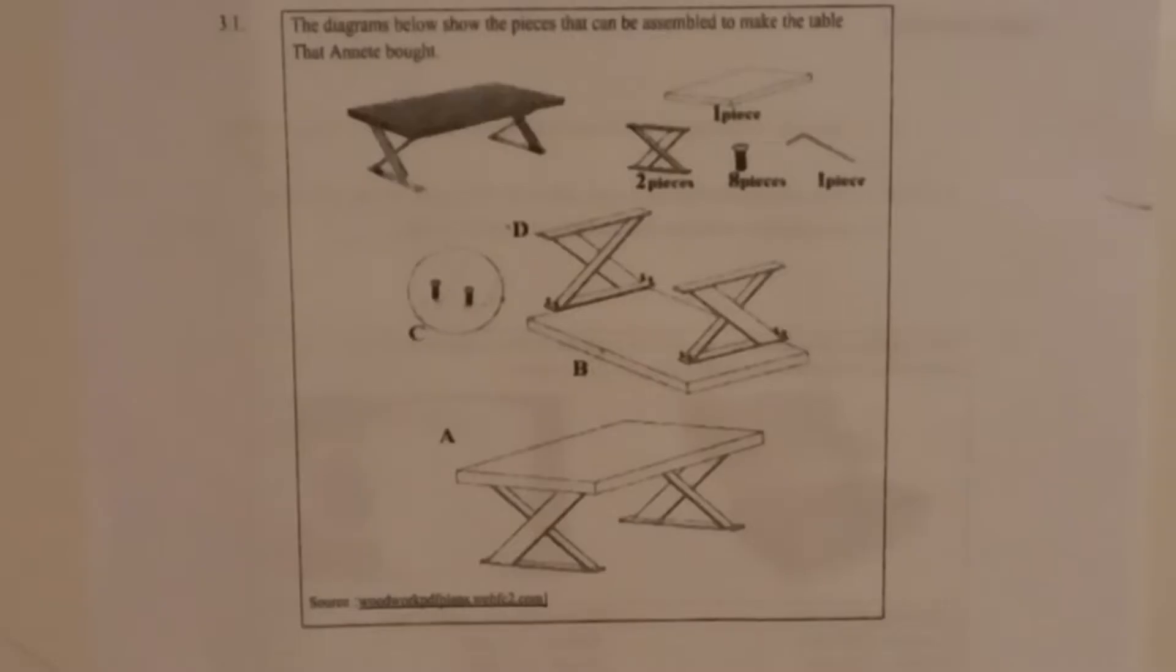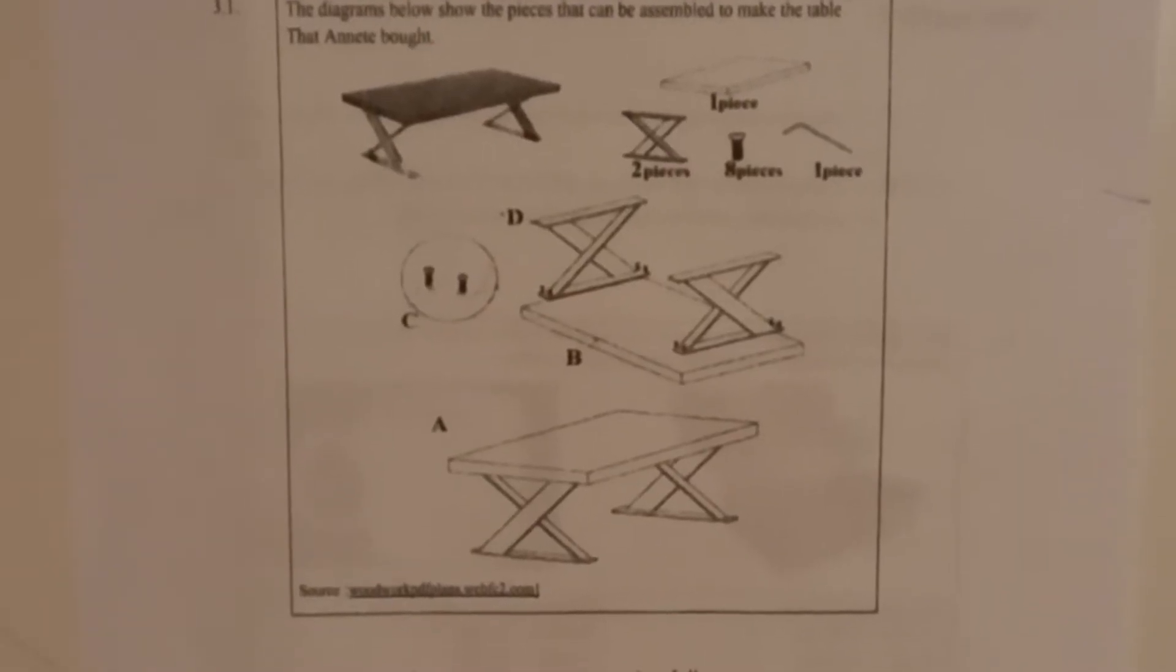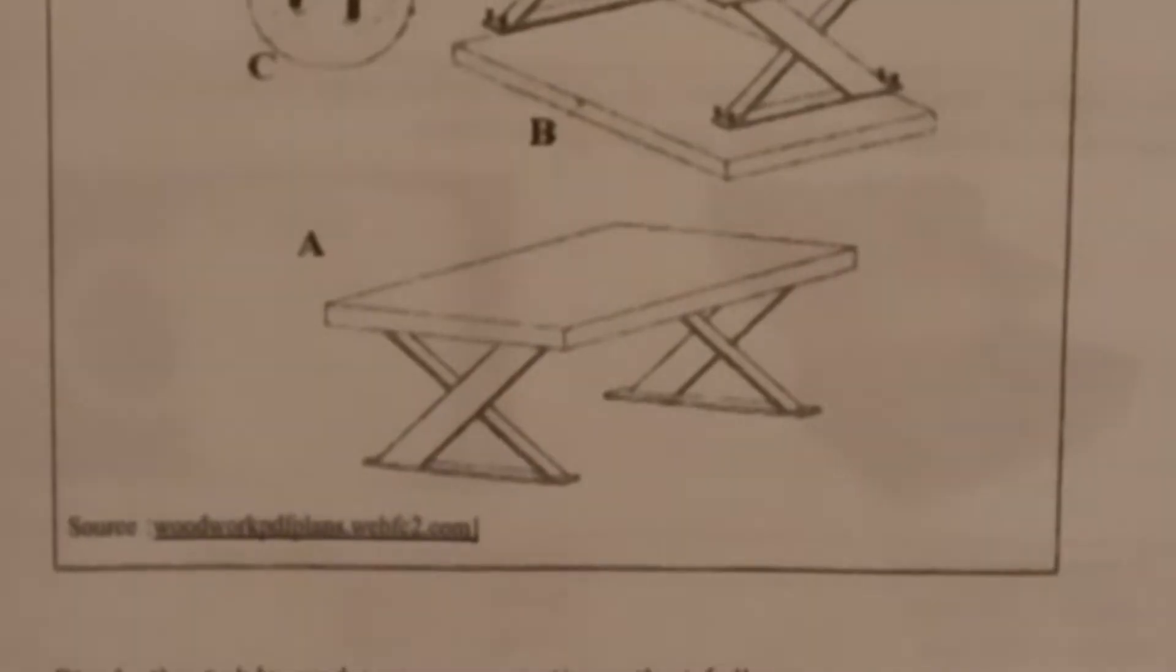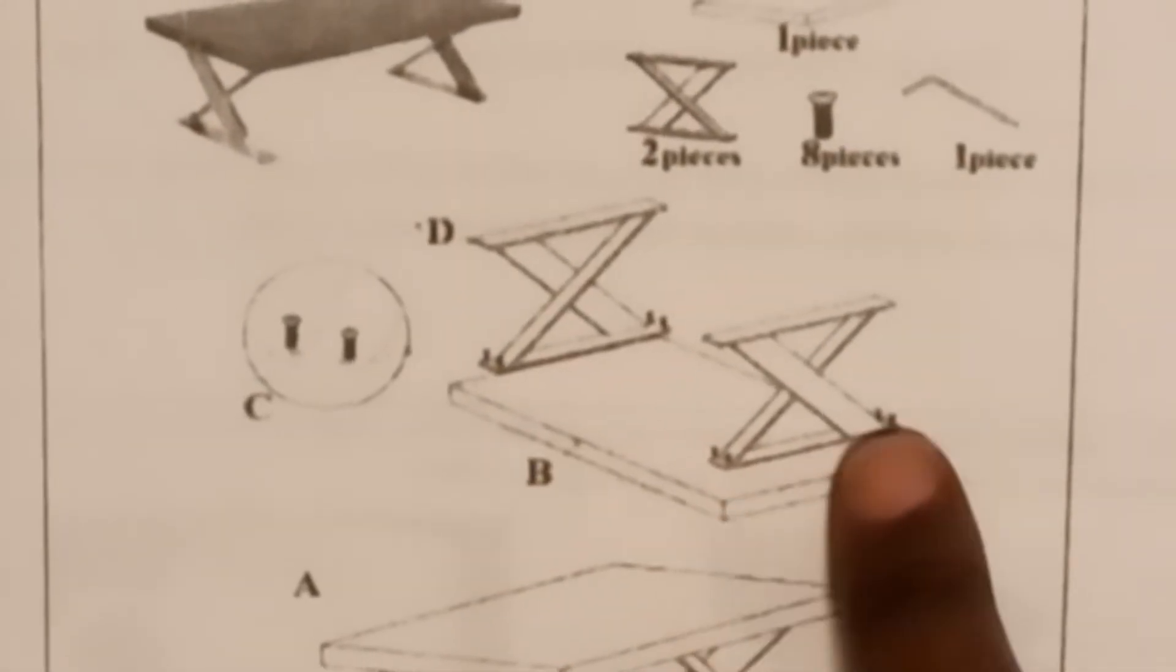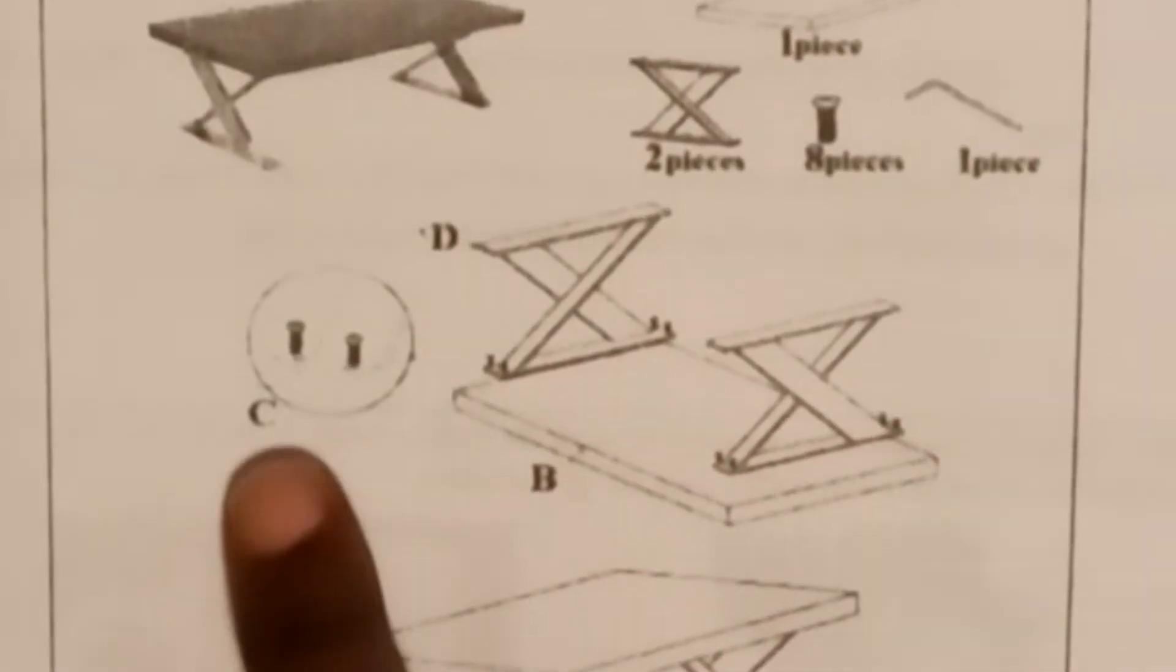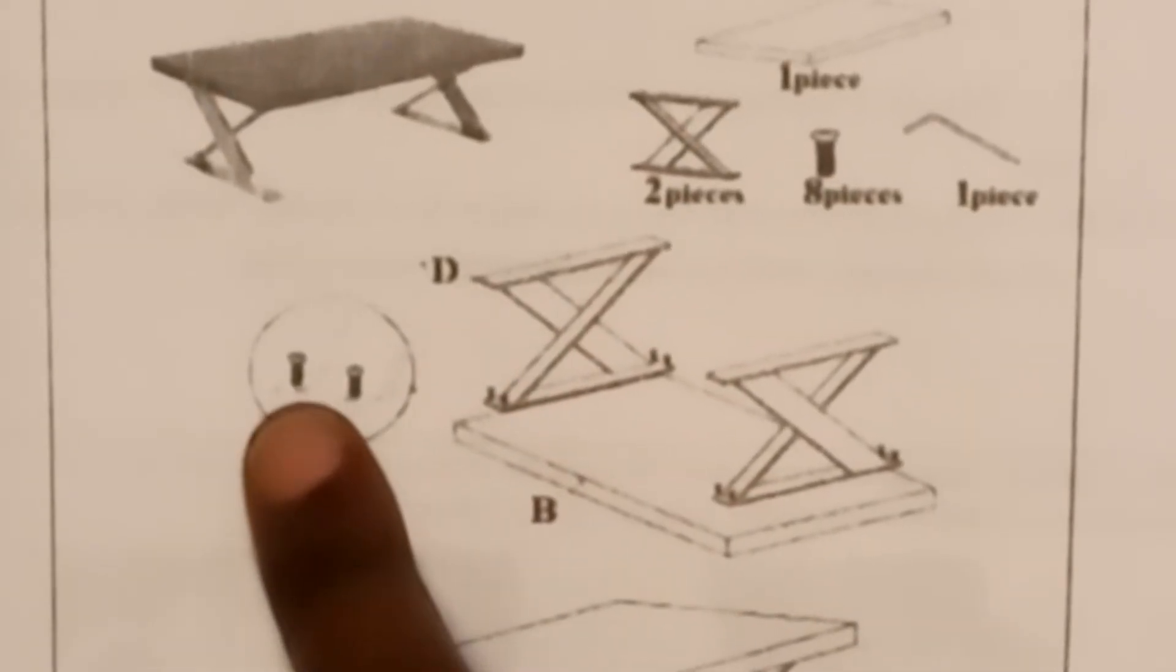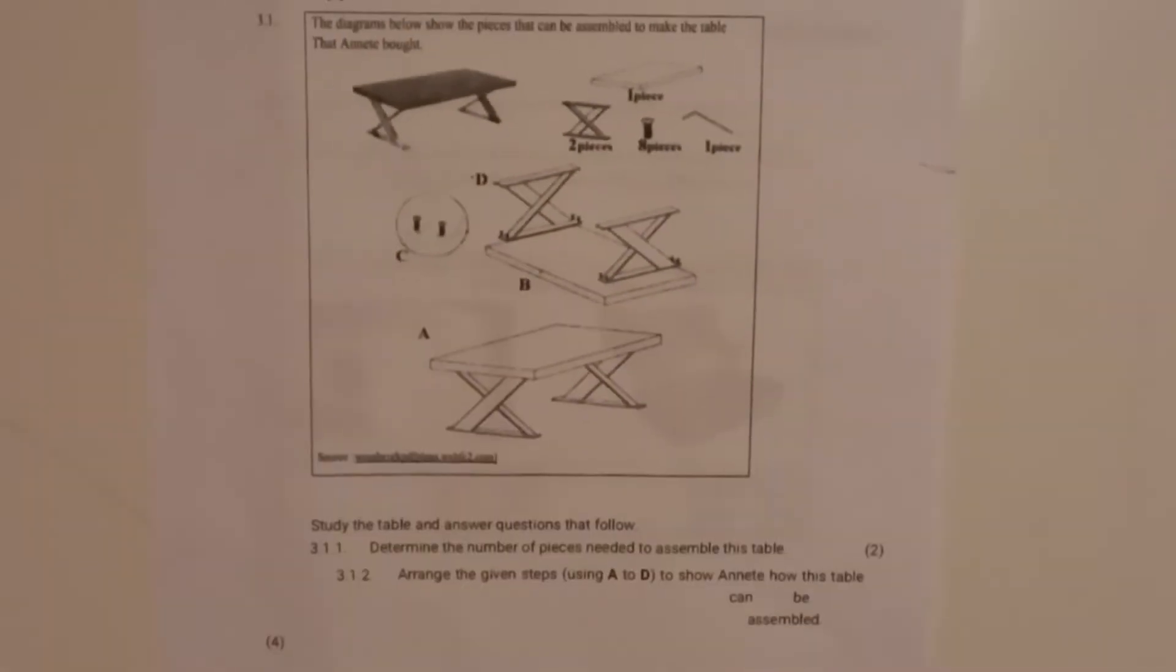And then after that they've given you drawings of the process. You have your A - A is your complete table, you have assembled it, it's done. B is when we are still putting the screws on. And then C is when we are putting the legs and the screws on. On C we are screwing the screws on. Let's look at the questions.